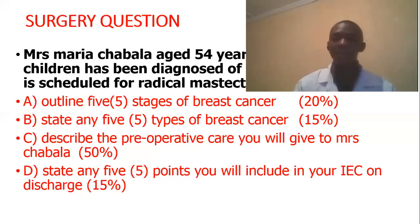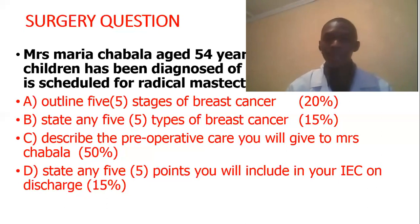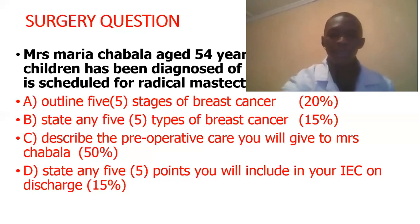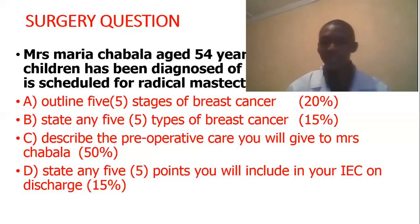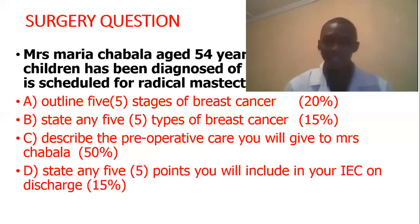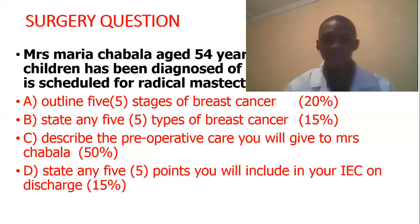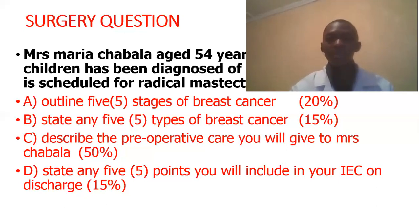The last question asks to state five points to include in your IEC on discharge. First, encourage the patient to exercise regularly to improve blood circulation and prevent muscle wasting, but advise them not to perform strenuous exercises.